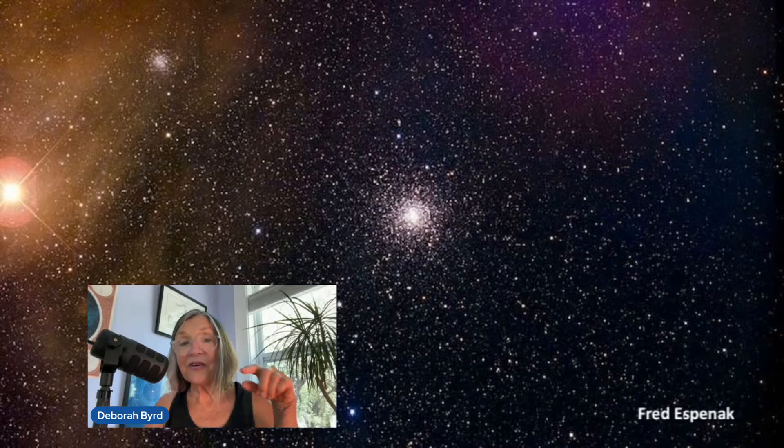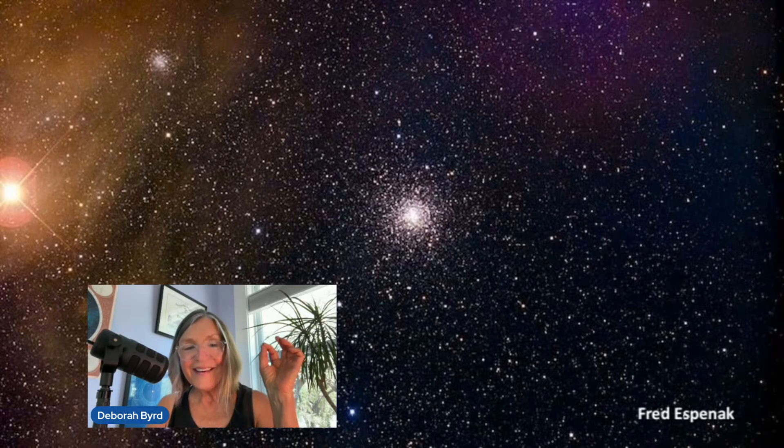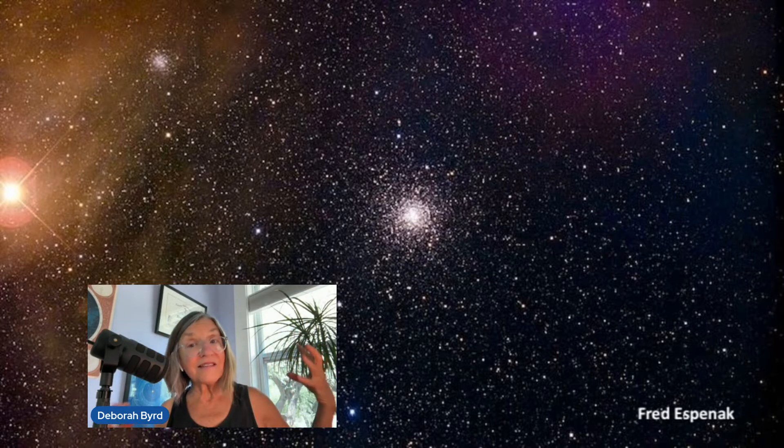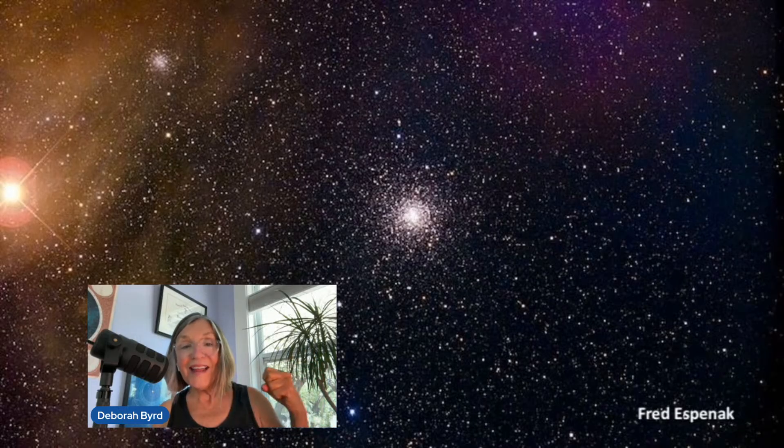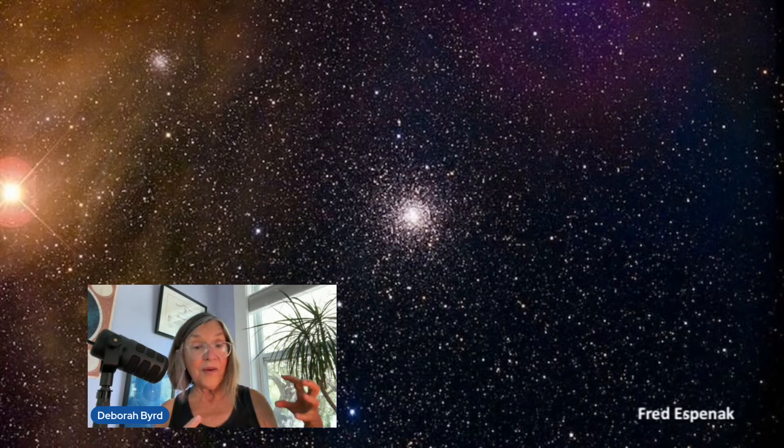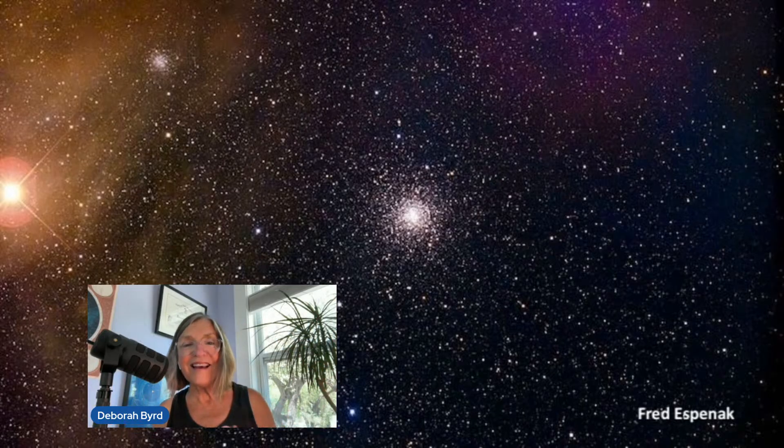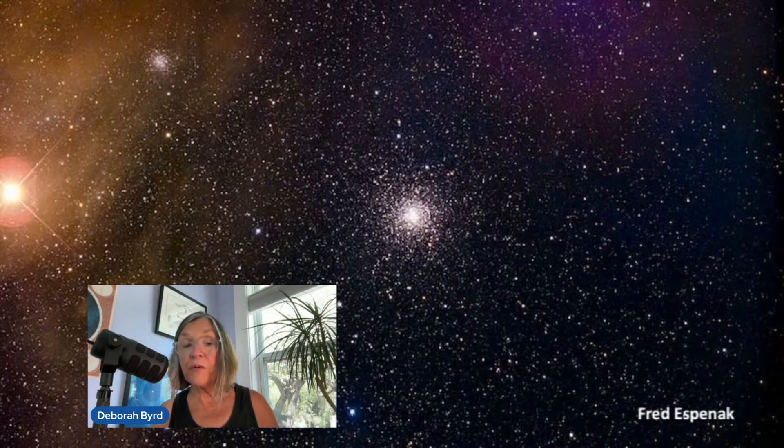Use your binoculars, and you can see this cluster as a small, faint, diffuse ball of light. But in a moderate-sized telescope, you can see it as a tight, symmetrical collection of stars. To me, it always looks like a dandelion about to lose its seeds. And it contains some of our galaxy's oldest stars. But that's a story for another time.